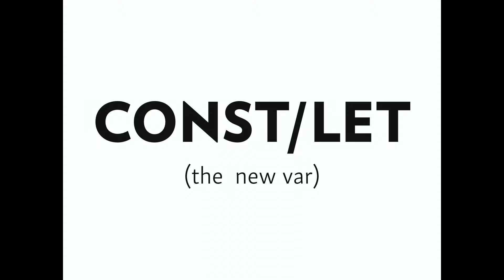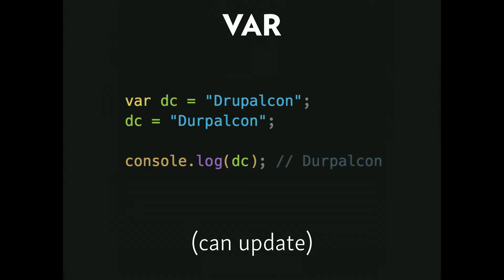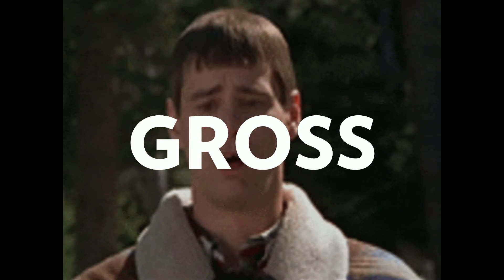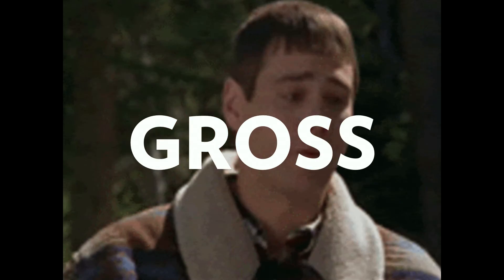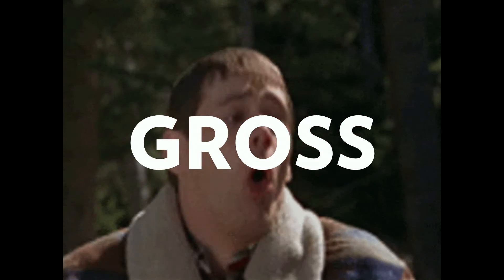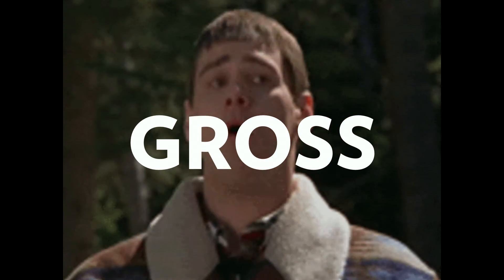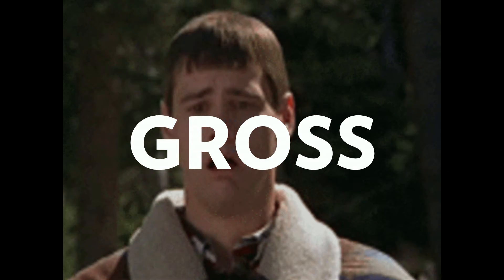Now that we're all set up and ready to go, let's check out some real ES6. To start, let's talk about const and let, which some people refer to as the new var. Var has some problems: you can update it and you can redefine it. If you have a large file or large scope, and you're not sure where your variable is being defined or if you're redefining it, that can cause a lot of headaches and cost you a lot of time.